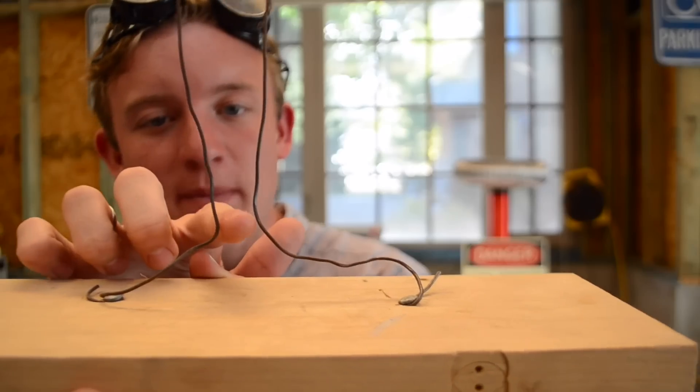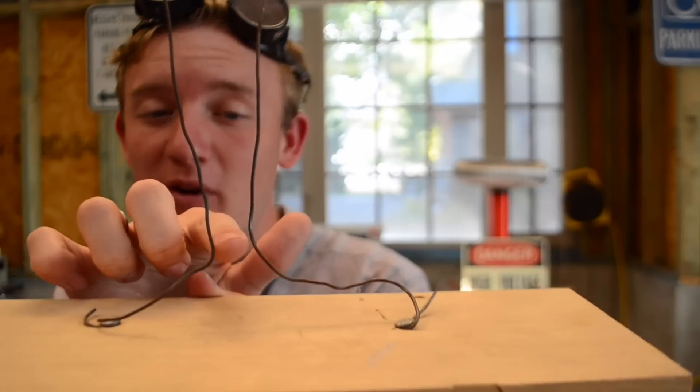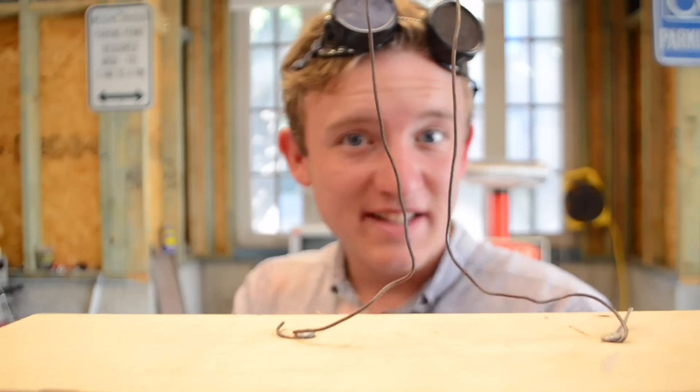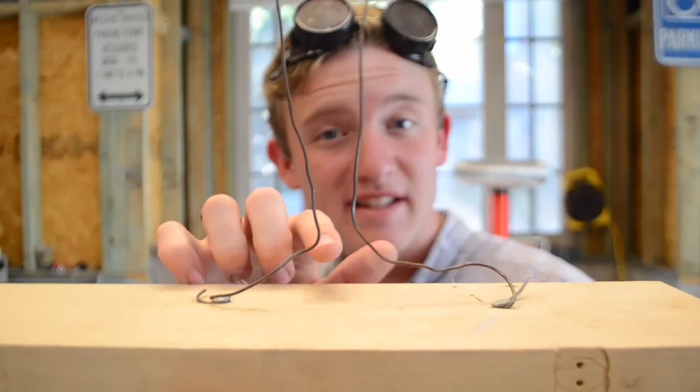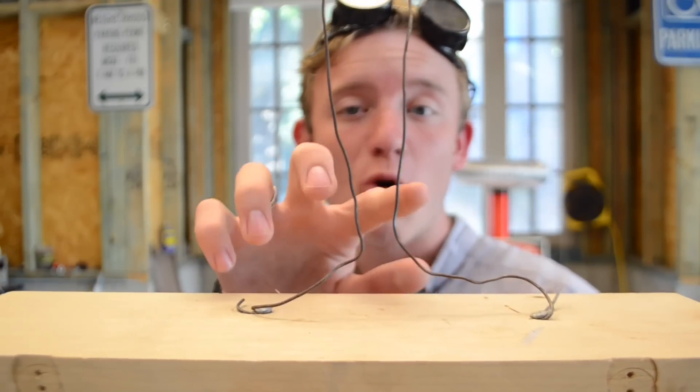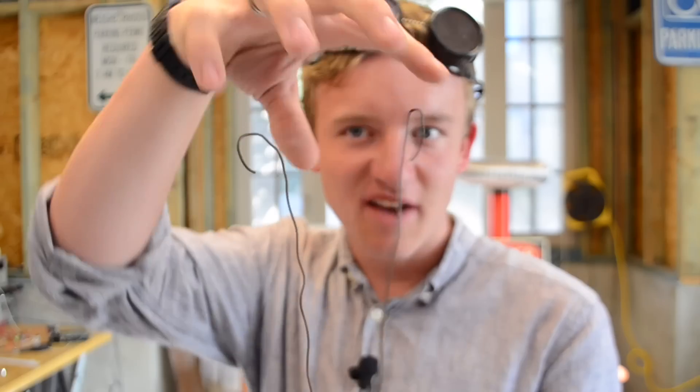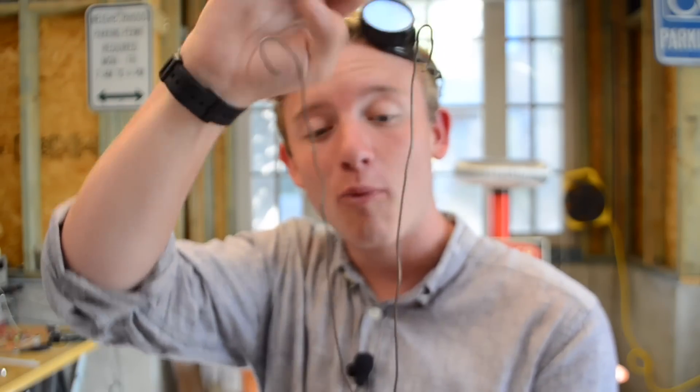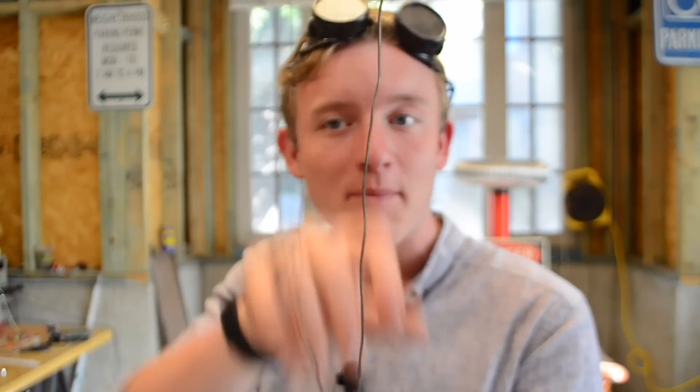However, in that video I failed to mention why a Jacob's Ladder performs the way it does. At the bottom here, since that's the easiest for the electricity to jump across, it'll jump across here, but as it does, the air around it heats up. As the air heats up, it becomes more conductive. Since heat rises, the electricity is going to follow the easiest path, which is following that warm air all the way up to the top. Eventually near the top, it's going to get to a point where it will be easier for it to jump across the bottom again than to stretch that distance, so the arc will break and it will restart at the bottom, climbing back up the ladder over and over.